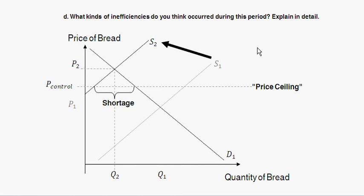Fourth is inefficiently low quality. Given this setup, suppliers have an incentive to reduce the quality of bread they produce. At this low controlled price, there are already more than enough demanders — the shortage exists regardless — so there's no competitive reason for suppliers to maintain quality. This allows an incentive for inefficiently low quality to occur.